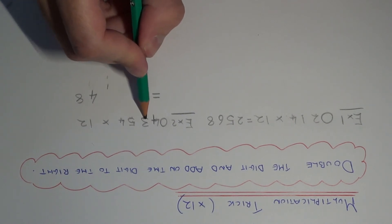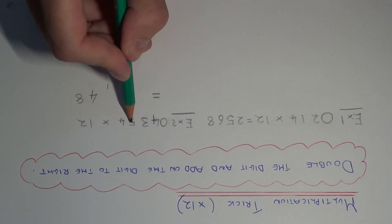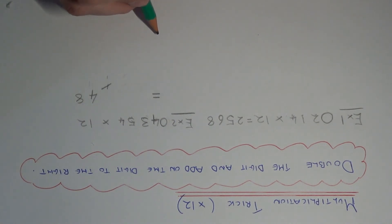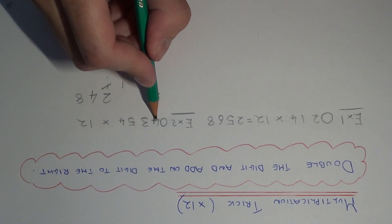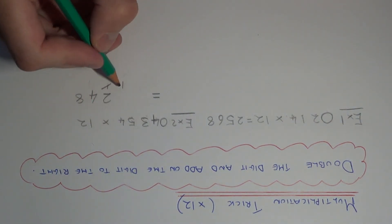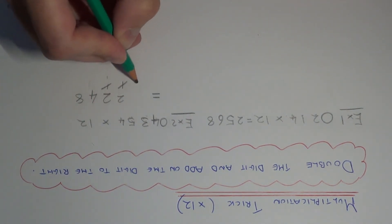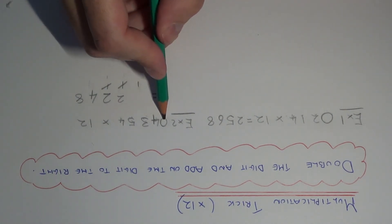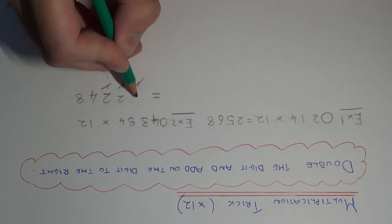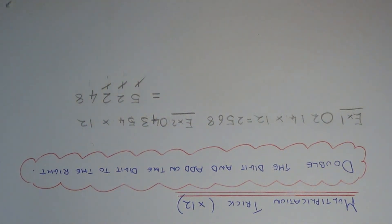Moving to the next digit: double the 3, add on the 5, makes 11. We also need to add on the 1 that we carried, which makes 12 — so we put the 2 here and carry the 1. Next digit: double the 4 is 8, add on the 3 to the right, so 8 add 3 is 11, plus the 1 carried makes 12. Finally, double the 0 is 0, add on the 4 makes 4, plus the 1 carried is 5. We get a final answer of 52,248.